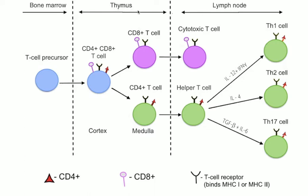T-cell differentiation continues even after they have left the thymus. Groups of specific differentiated T-cells have an important role in controlling and shaping the immune response by providing a variety of immune-related functions.